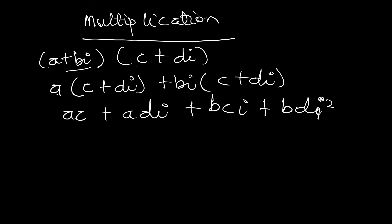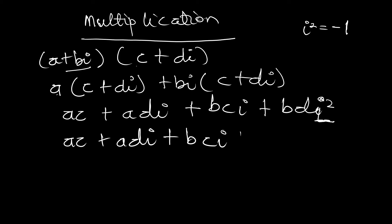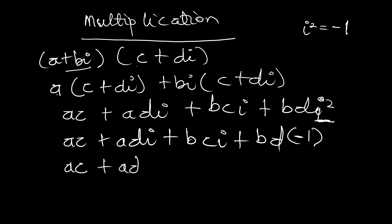Now let's do some simplification. When we introduced complex numbers we made mention of the fact that i squared is equal to negative one. So wherever we find i squared we substitute negative one. Here we have i squared, so simplifying we get ac plus adi plus bci plus bd, and we replace the i squared by negative one, making that last term bd times negative one, which is negative bd.